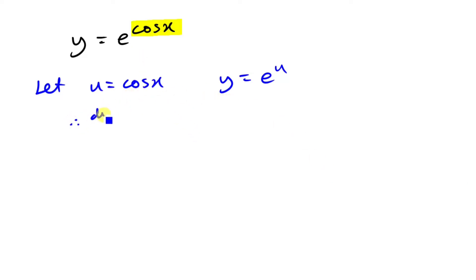So now we've got du/dx, which is the first one. Differentiate cos x gives you minus sine x. And don't forget the y here. Differentiate y, so dy/du will give us just the same thing, e to the power u.